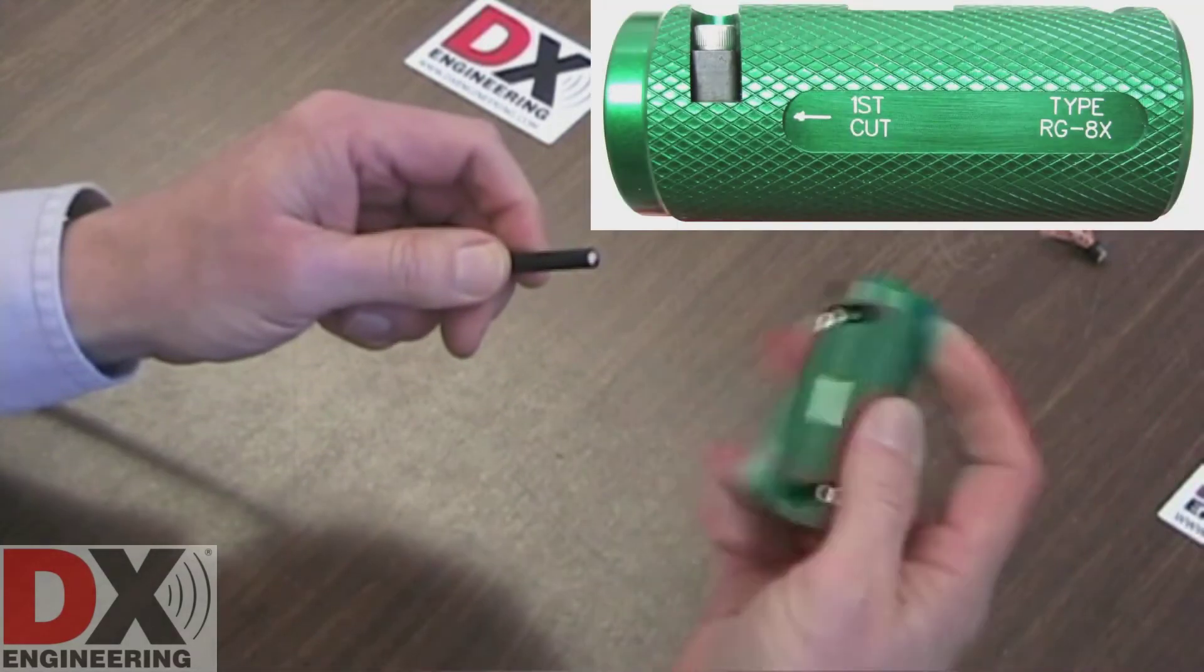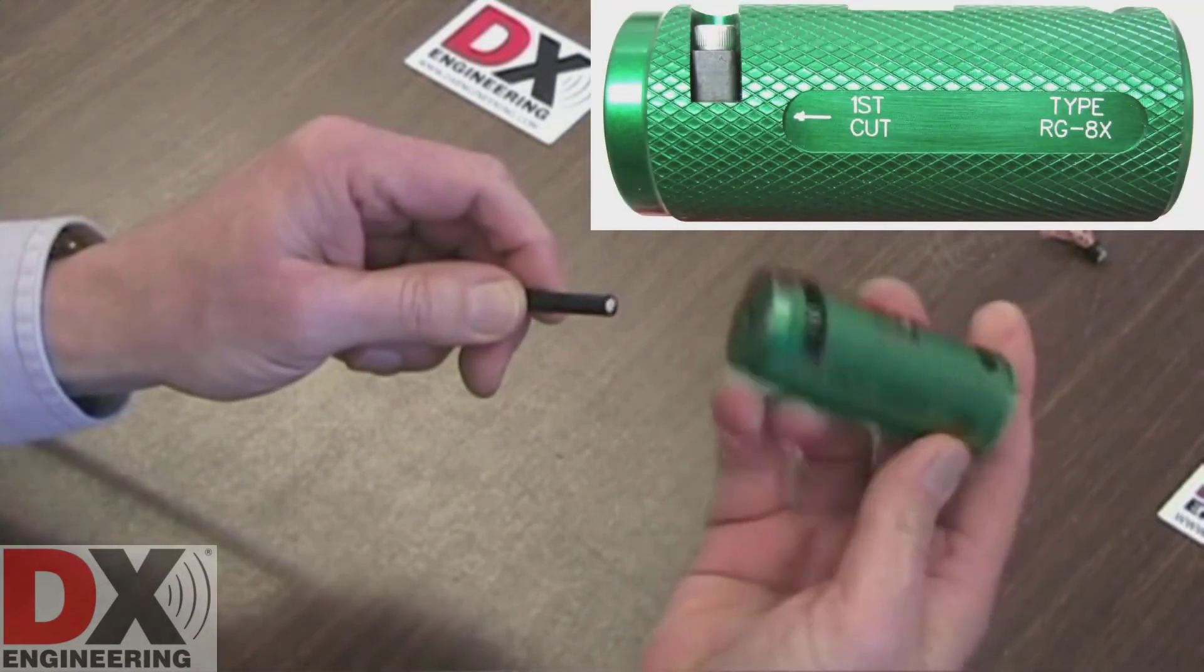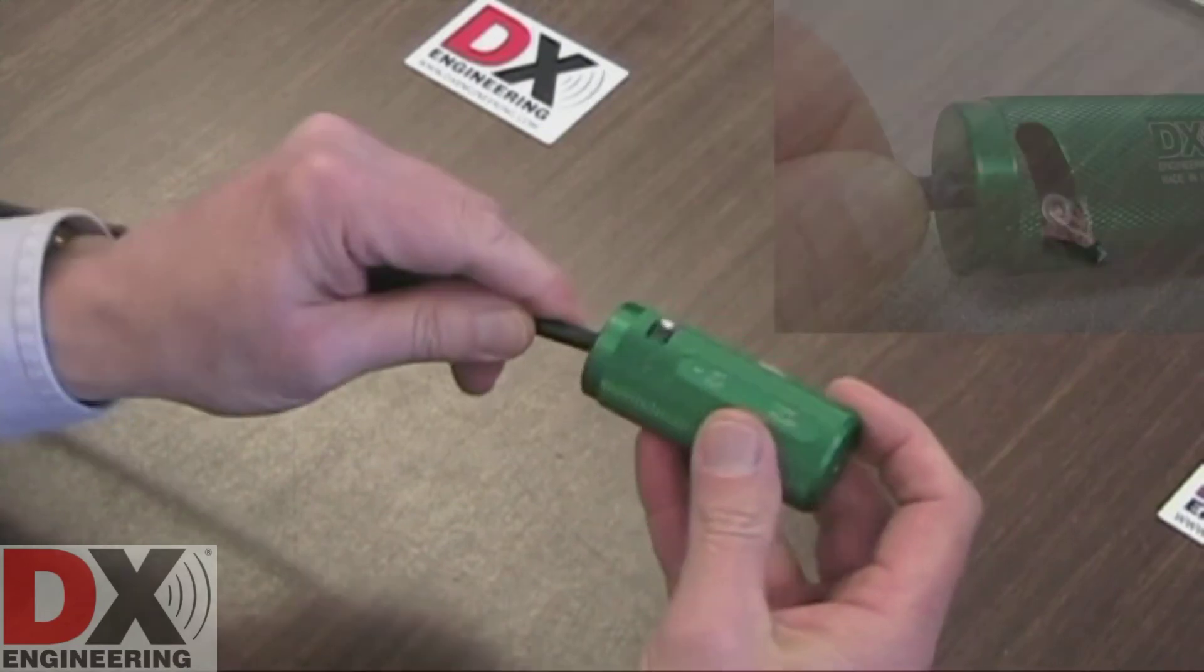Using the tool, select the end that says First Cut. Insert the coaxial cable until you feel it being stopped by the cutting blade.